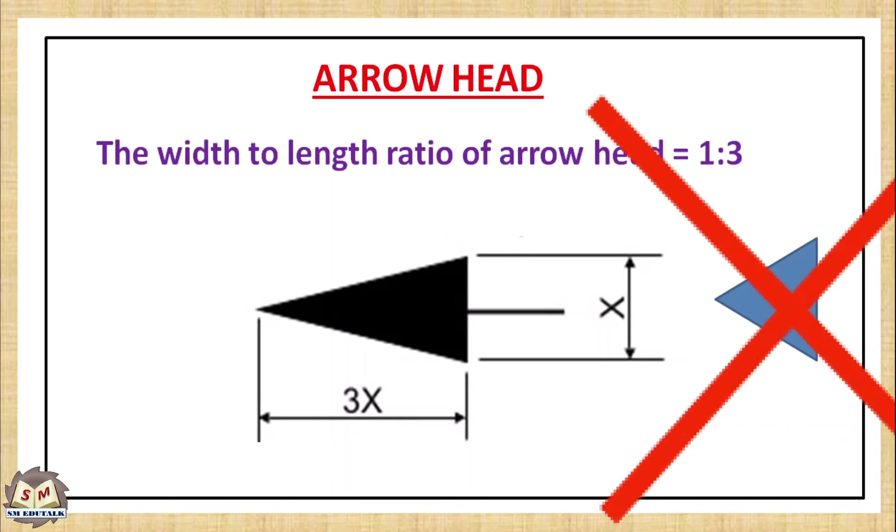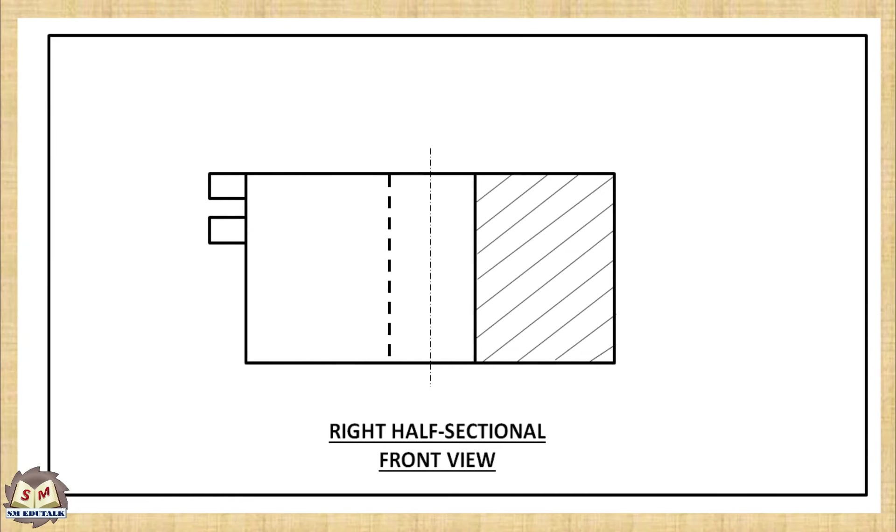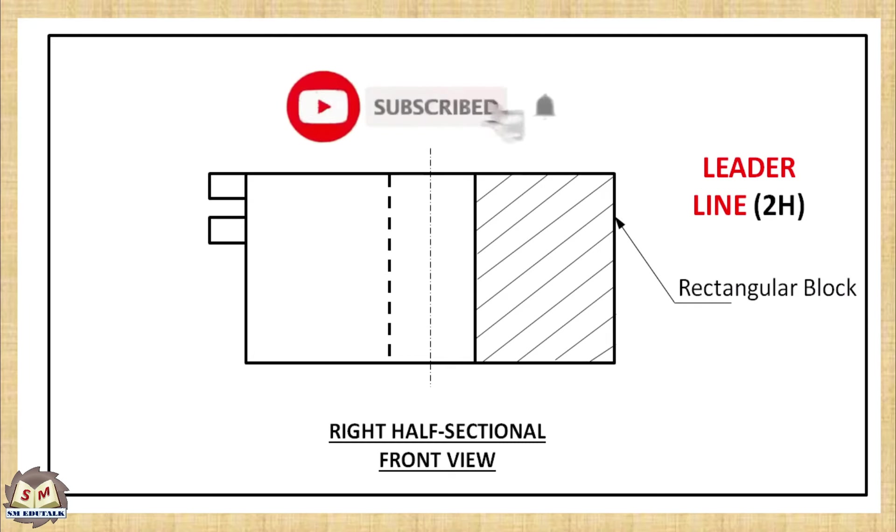Figure shows the right half sectional front view of a rectangular block having a central vertical hole and two fins at the left end. Leader line can be used to indicate the name of the object. For this purpose, leader line uses a normal triangular arrow head at its end that touches the outline of the object. The object is sectioned on the right side, so that portion is hatched. To indicate the sectional area, leader line's one end is kept inside the hatched portion.